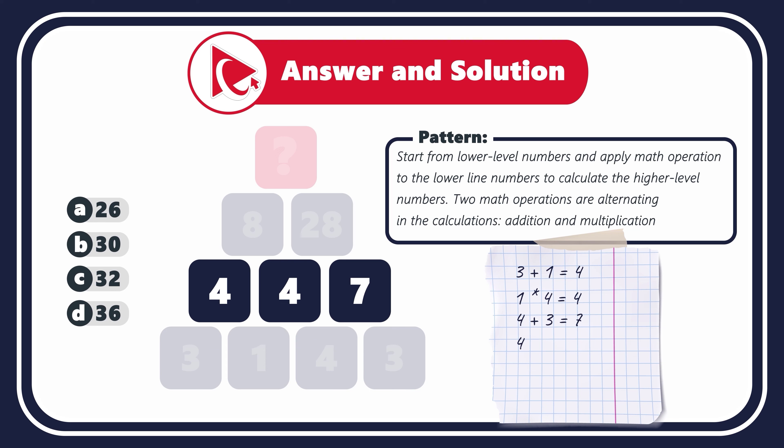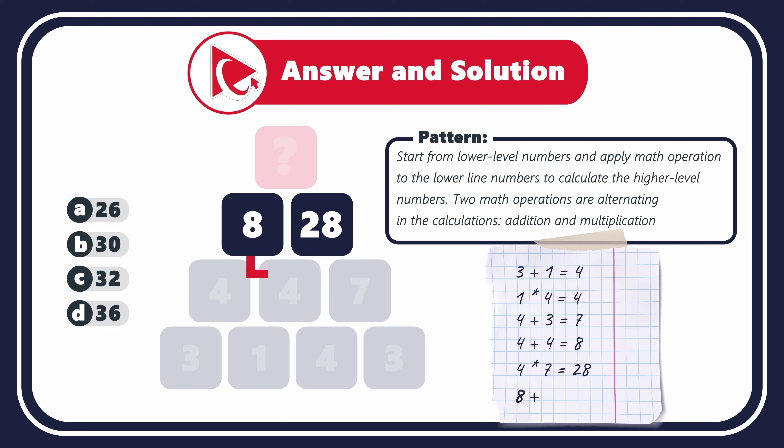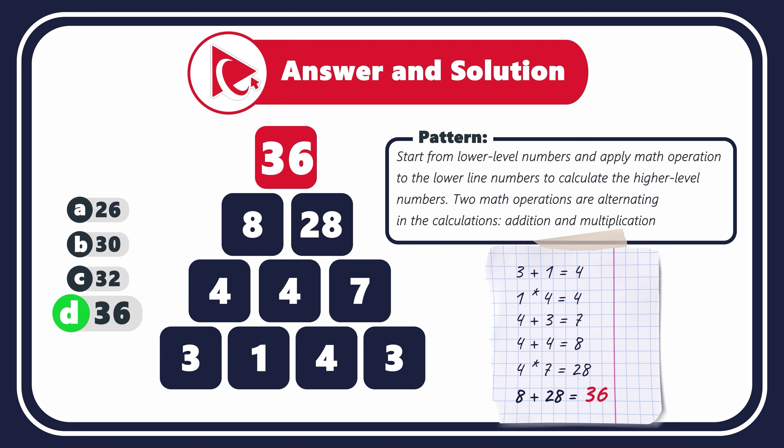Let's go to row 2. 4 plus 4 equals 8. But 4 multiplied by 7 equals 28. So to calculate the top number, we need to add 8 and 28 to get to the final result of 36. So the correct answer here is choice D, 36.